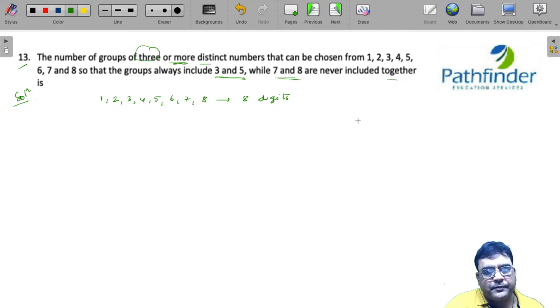Which means that either I can have a group of 3 or 4 or 5 or 6 or 7. I can't have 8 of them together because 7 and 8 can never be together.